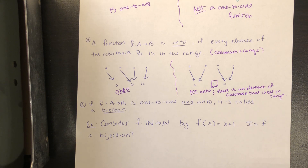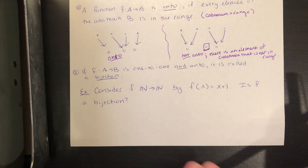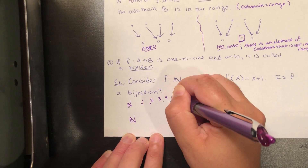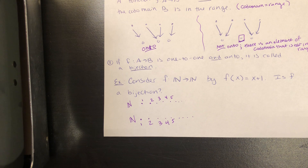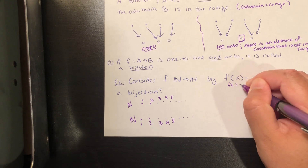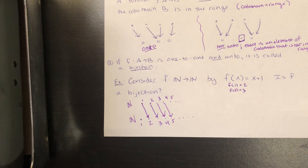In some specific cases, you could have a function that's both one-to-one and onto, and we call that a bijection. That can only happen if you have the same number of elements in the domain as in the co-domain. Let's define a function from the natural numbers to the natural numbers by F of X equal to X plus one. Is this function a bijection? Let's draw a diagram: domain and co-domain are both N — 1, 2, 3, 4, and so on. This function says your output is that number plus one, so F of 1 equals 2, F of 2 equals 3, etc. — everything shifts up by one.